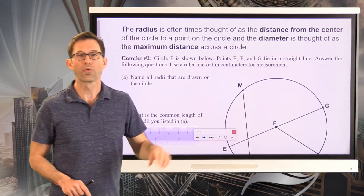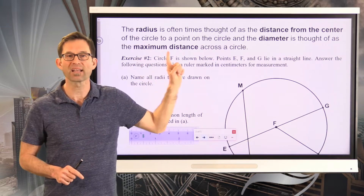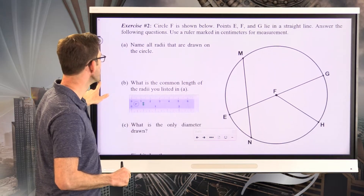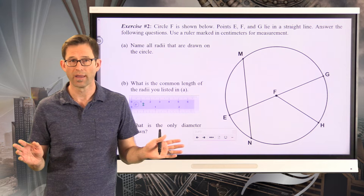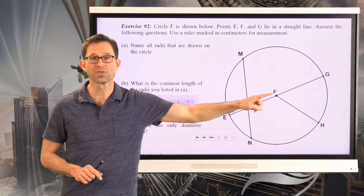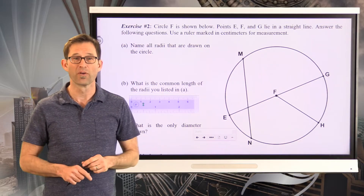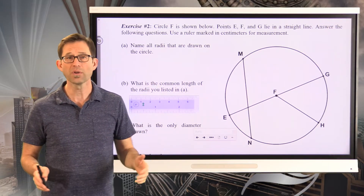The radius is often thought of as the distance from the center of the circle to a point on the circle, and the diameter is thought of as the maximum distance across the circle. Let's take a look at both ideas in exercise number two. Circle F is shown below. Points E, F, and G lie on a straight line. Letter A: name all radii that are drawn on the circle. A circle has an infinite number of radii, but in this particular diagram we've only drawn a certain number. List each one of those radii — not their length, just name the segments. Pause the video now.